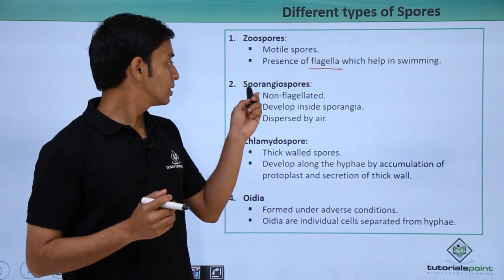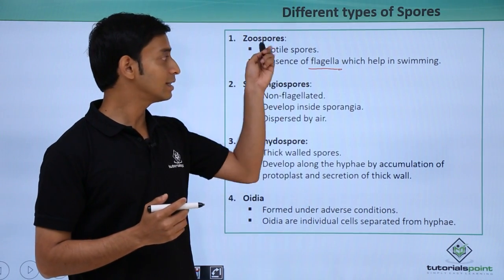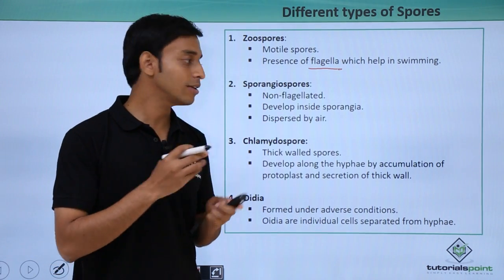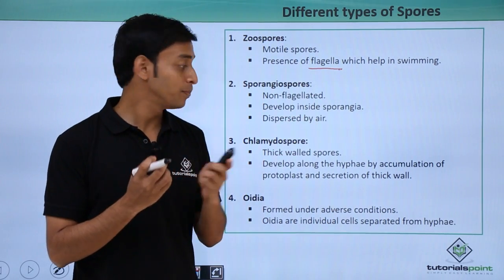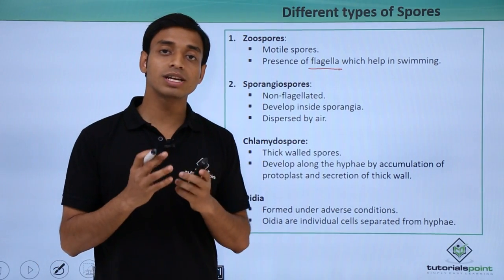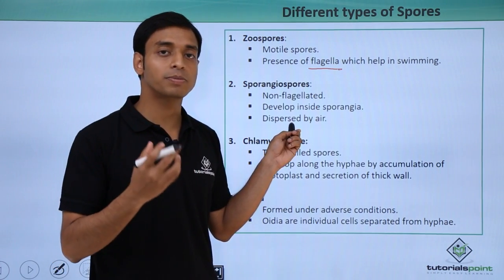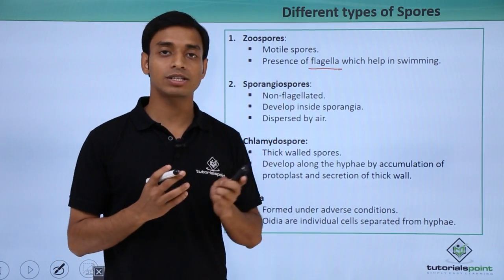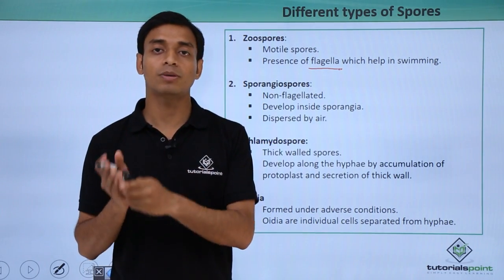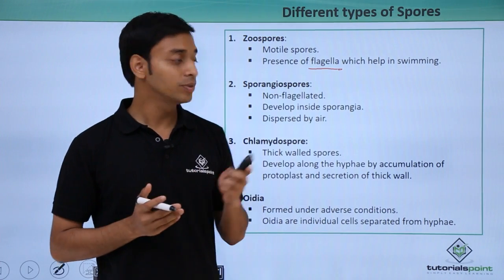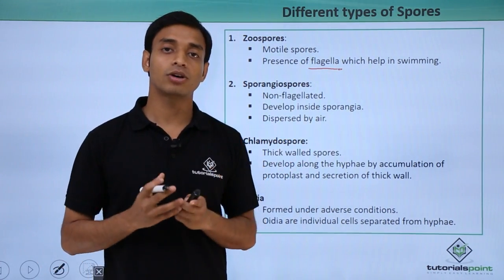The second category is sporangiospores. These are non-flagellated — unlike zoospores, they do not have flagella. They mostly develop inside structures known as sporangia and are produced in large numbers because they are dispersed by air. Since they cannot move on their own, a large number are formed to ensure proper dispersal.